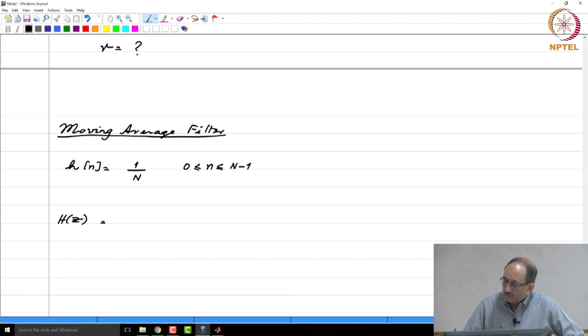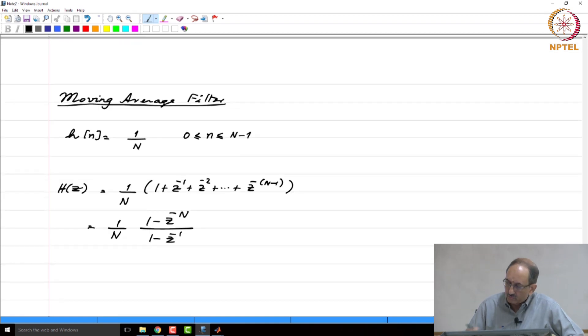This you have seen. So the transfer function is 1 over n times 1 plus z inverse z to the minus 2 up to z to the minus n minus 1, which is nothing but 1 over n, 1 minus z to the minus cap n by 1 minus z inverse. We have seen this before, just recalling this result.